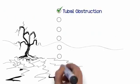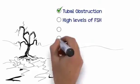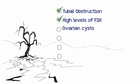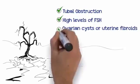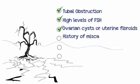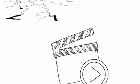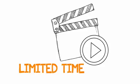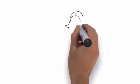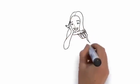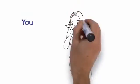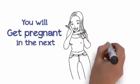You have tubal obstruction, high levels of FSH, ovarian cysts or uterine fibroids, a history of miscarriages, or your male partner has low sperm count or motility. If you watch this video from start to finish and follow what I teach, I can almost guarantee you'll get pregnant in the next 2 months.